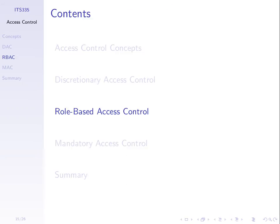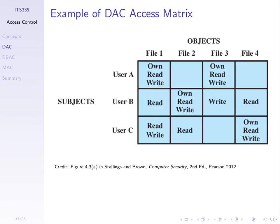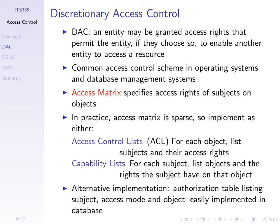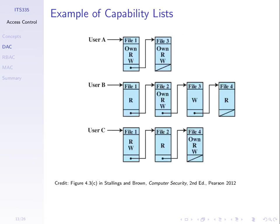Let's look at the other two approaches. The aspect of discretionary that I didn't mention was that once there are some initial access rights, users may be able to modify them—they have some discretion to make changes. We'll see that mandatory access control, especially, doesn't allow that.